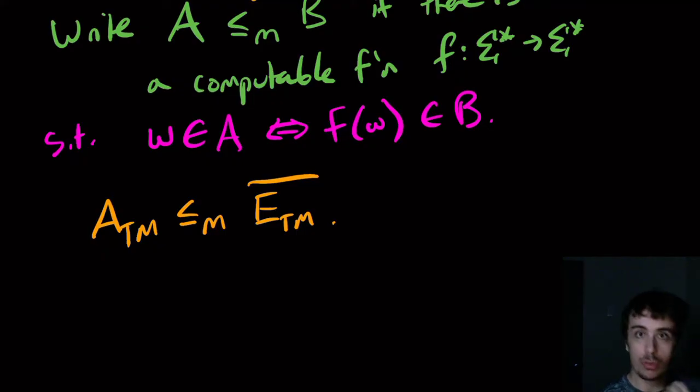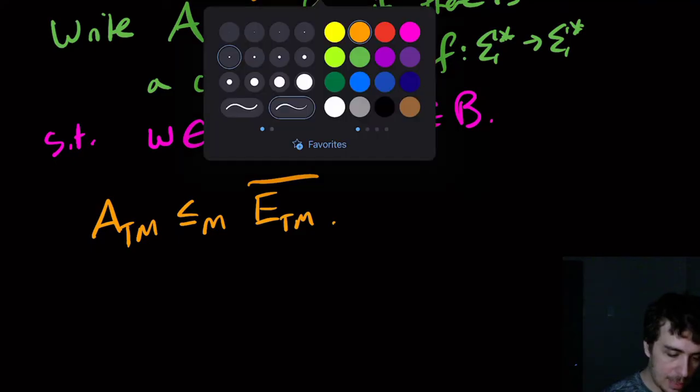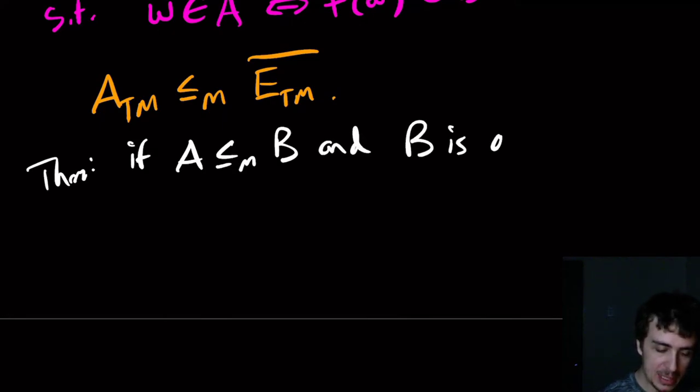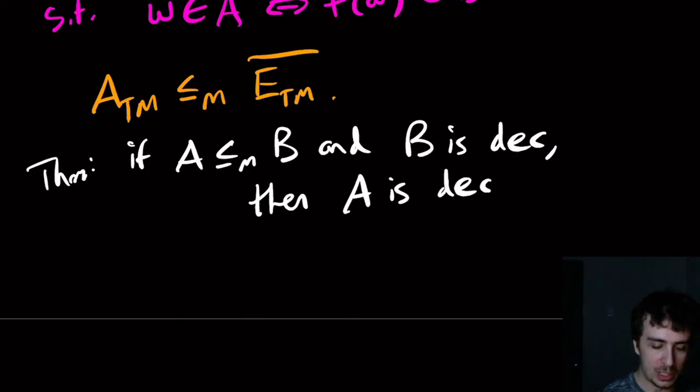So there are some other properties that we're going to show, namely this one. Here's a little theorem that we'll show: if A ≤_m B, so mapping reduces to B, and B is decidable, then A is also decidable.